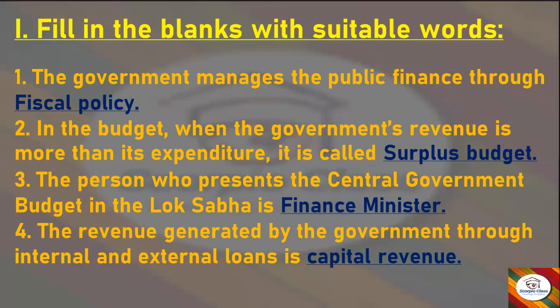Now let's get started with the fill in the blanks. First: the government manages public finance through — answer is fiscal policy. Second: when the government's revenue is more than its expenditure it is called — answer is surplus budget. Third: the person who presents the central government budget in the Lok Sabha is — answer is finance minister. Fourth: the revenue generated by the government through internal and external loans is — answer is capital revenue.